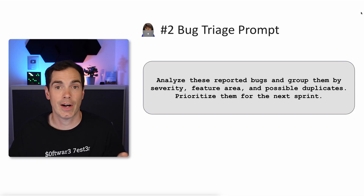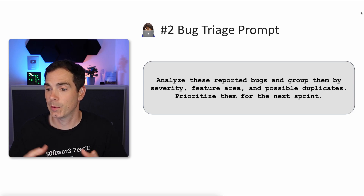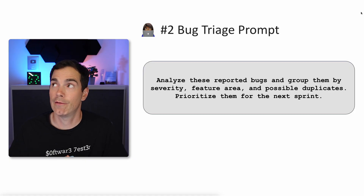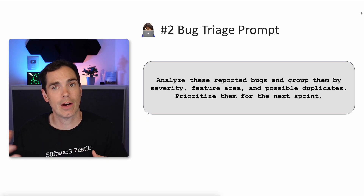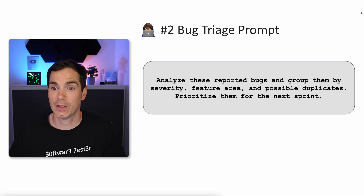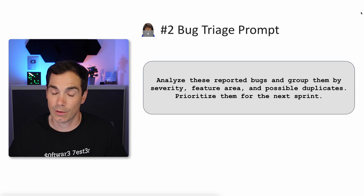Prompt two: bug triage. Analyze these reported bugs and group them by severity, feature area, and possible duplicates — then prioritize them for the next sprint. This is especially valuable when you receive lots of bug reports, for example from a crowd testing provider. Imagine you have hundreds of crowd testers delivering bug reports in an Excel-based format. You need a triage mechanism that can group, remove duplicates, and establish priorities for you in a few seconds.